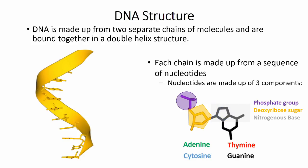These names are often abbreviated to A, T, C, and G respectively. On a single strand of DNA, nucleotides are held together with bonds between the phosphate group on one nucleotide and the deoxyribose sugar on the next.